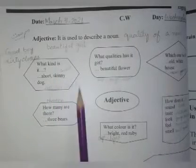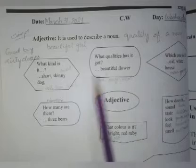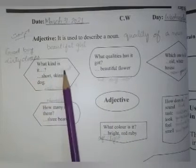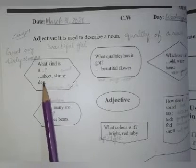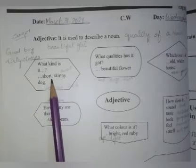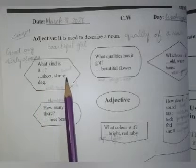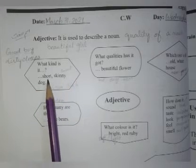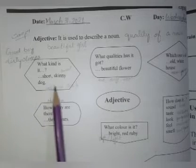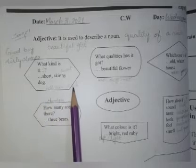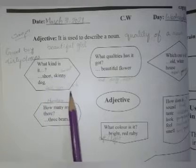Now let's see what kinds of adjectives there are. What kind is it? For example: short skinny dog — short means chota, skinny means dubla, dog means kutta. So 'chota dubla kutta' — short skinny dog. Here we can also see: tall dog, thin dog, thick leaves. Tall, thin, and thick are also this type of adjective describing size.